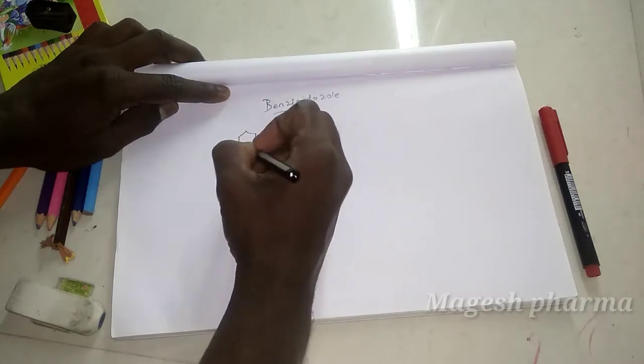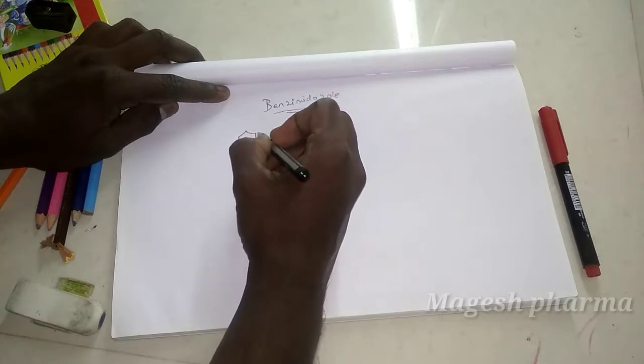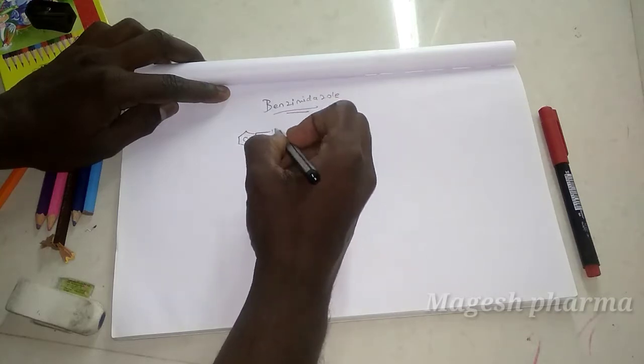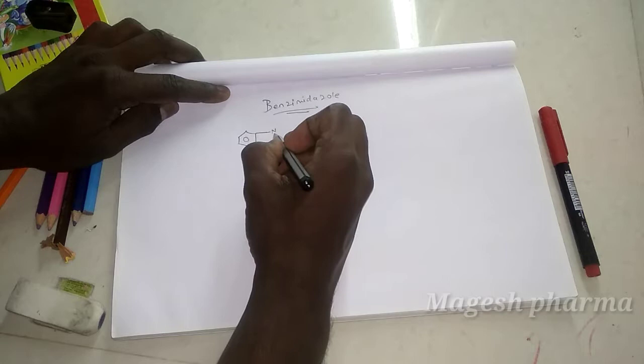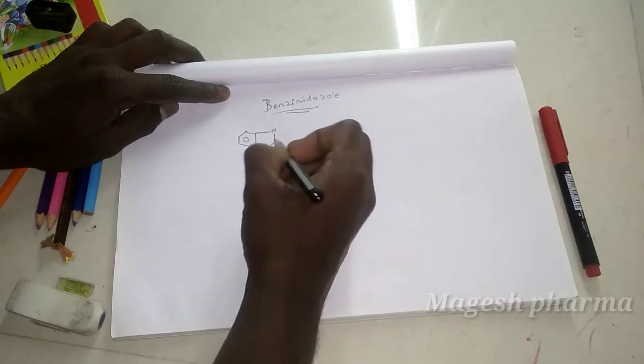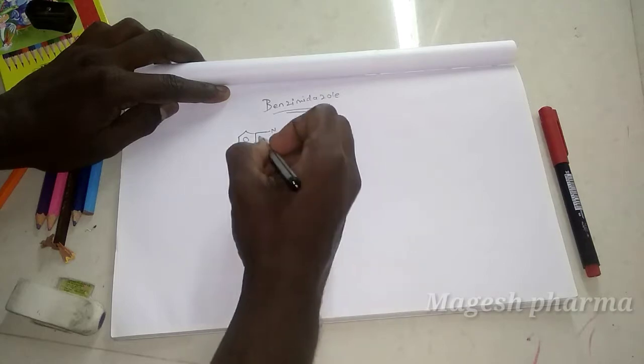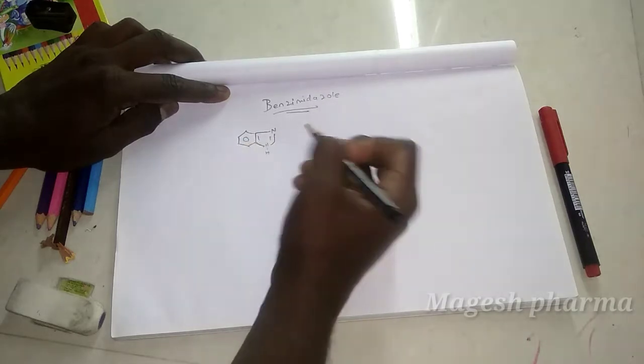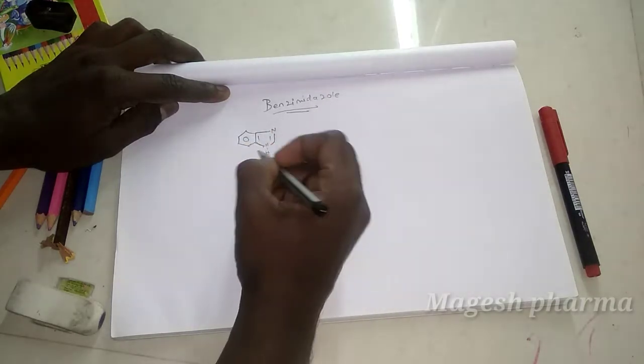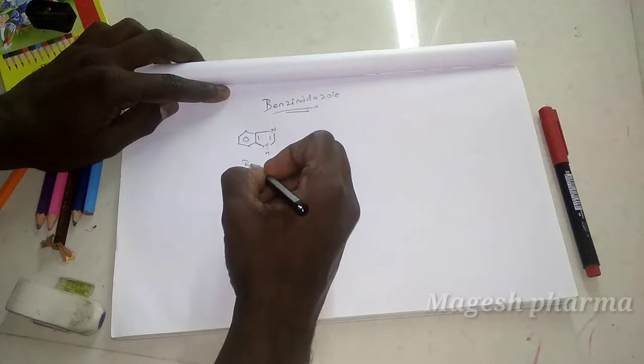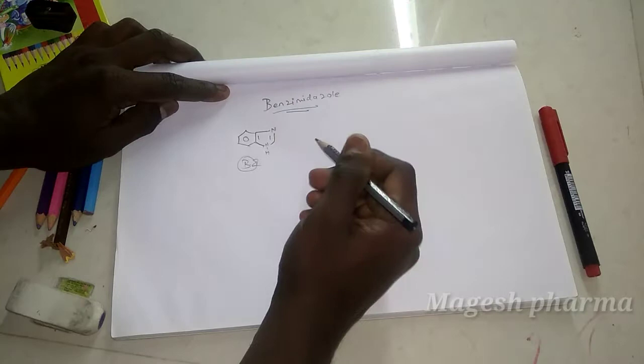First, write the structure of benzene, then add the imidazole structure, which is N and NH. This is benzimidazole.